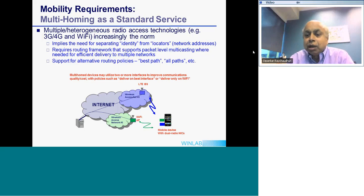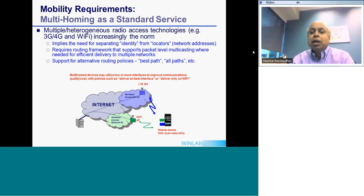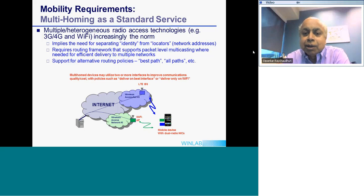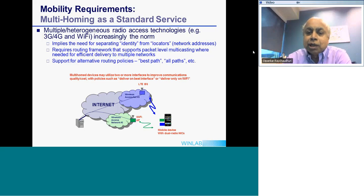It's not limited to two — you might simultaneously communicate over five networks as hardware costs fall. This means the network protocol needs to be designed differently, separating identity of the device from the network addresses to which it is connected. Today IP conflates those two items: identity is derived from network location itself. If you want to do multi-homing properly, you need to separate those two and create a routing architecture with awareness of both locators and identity.